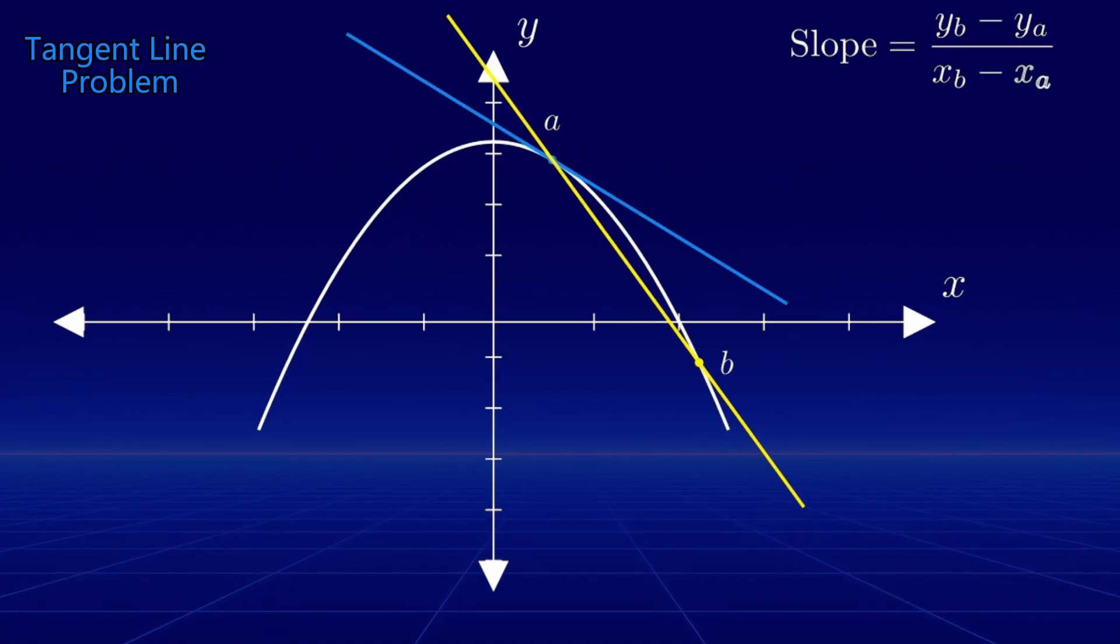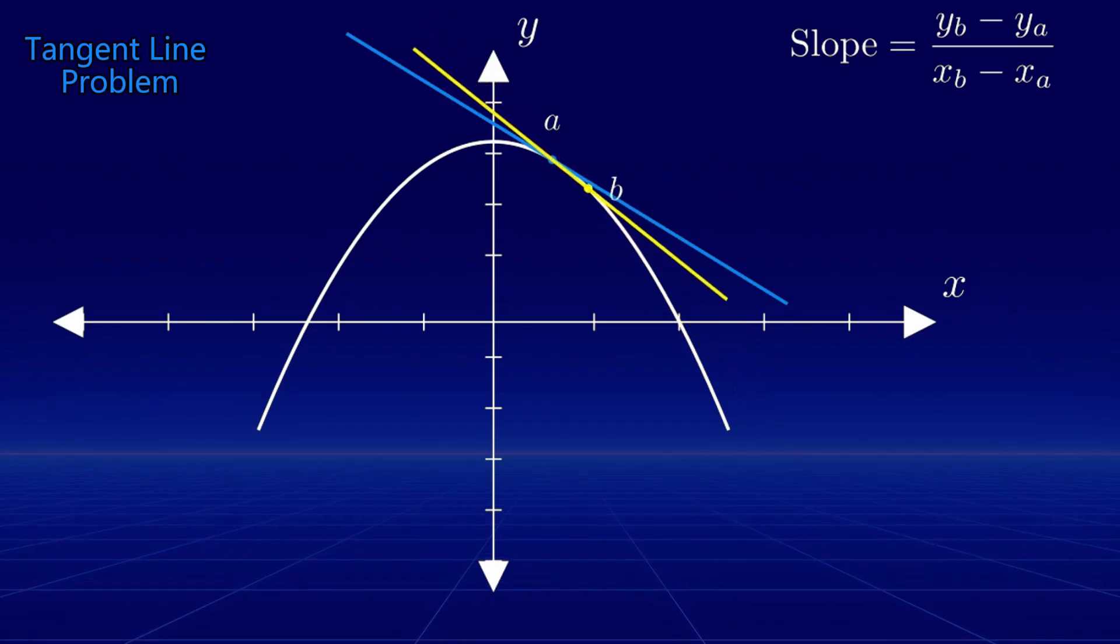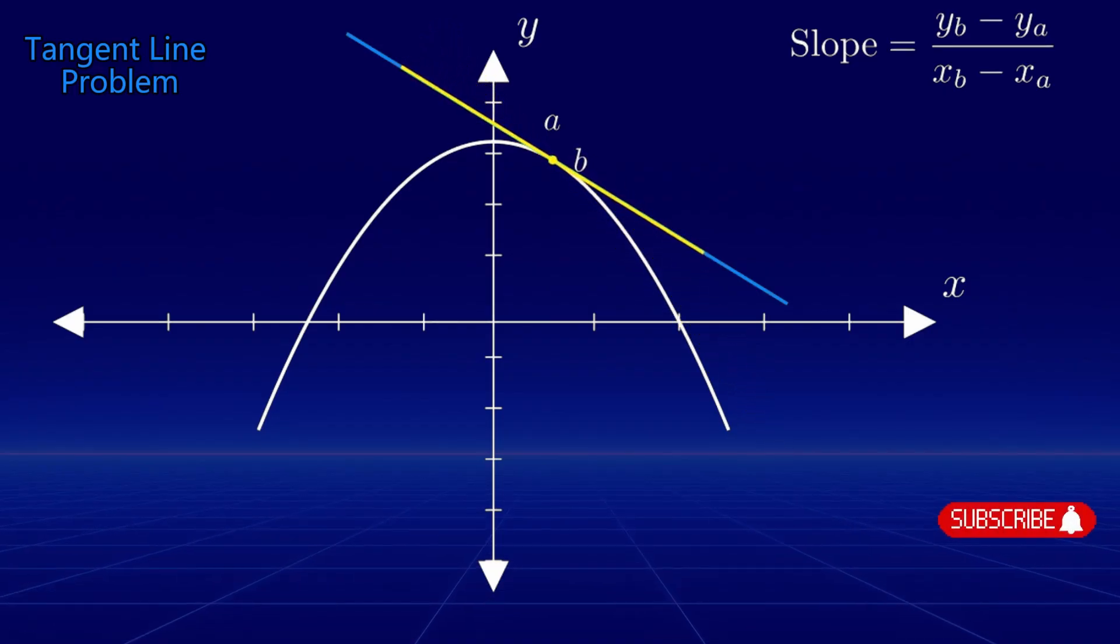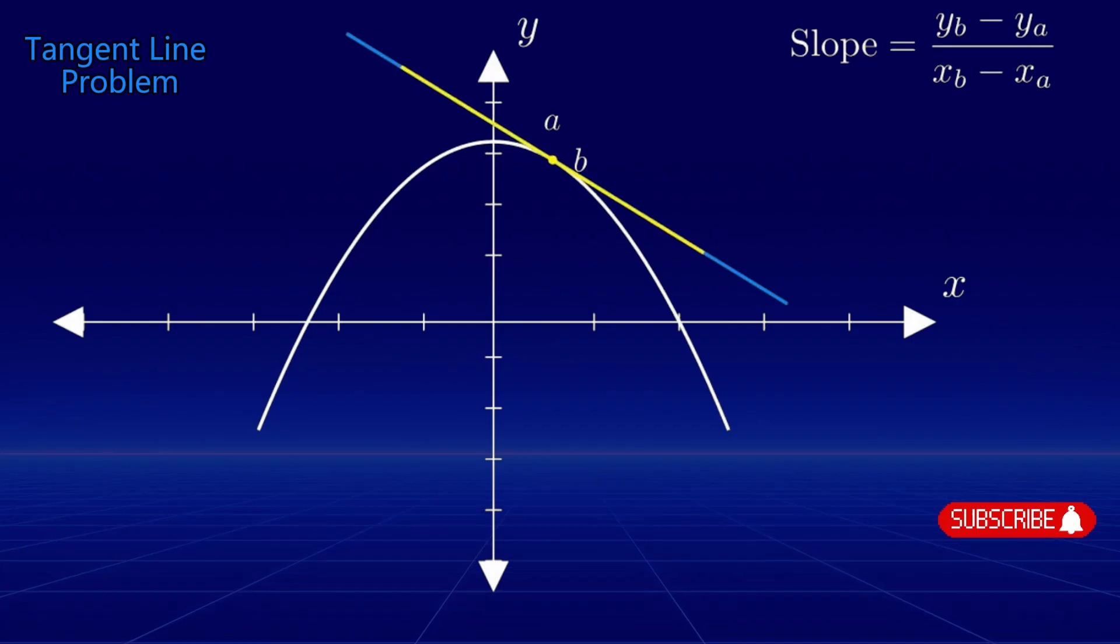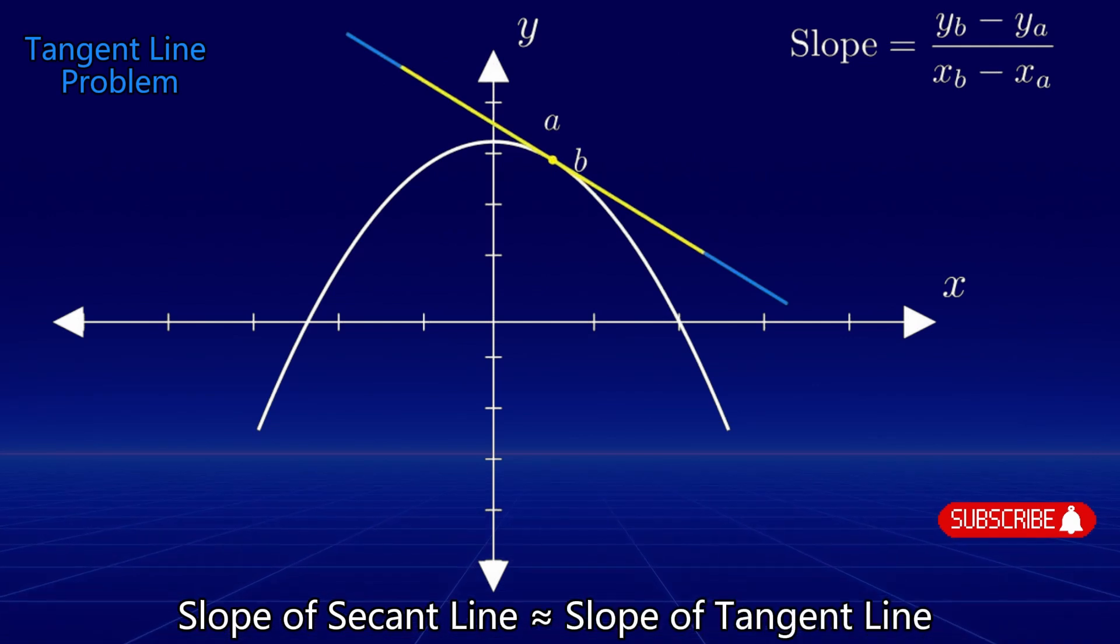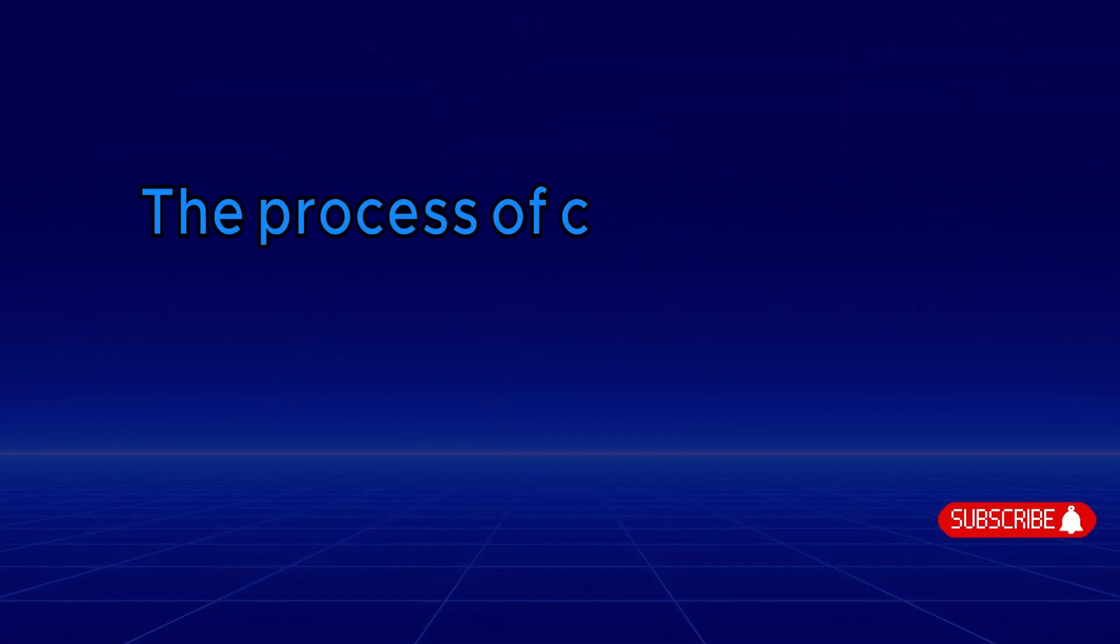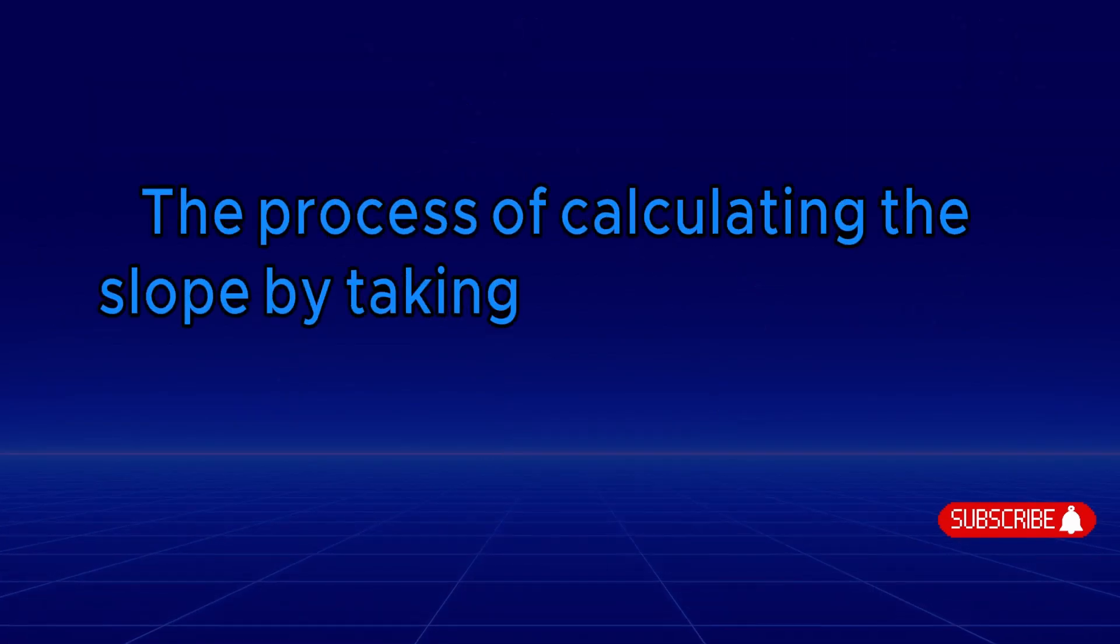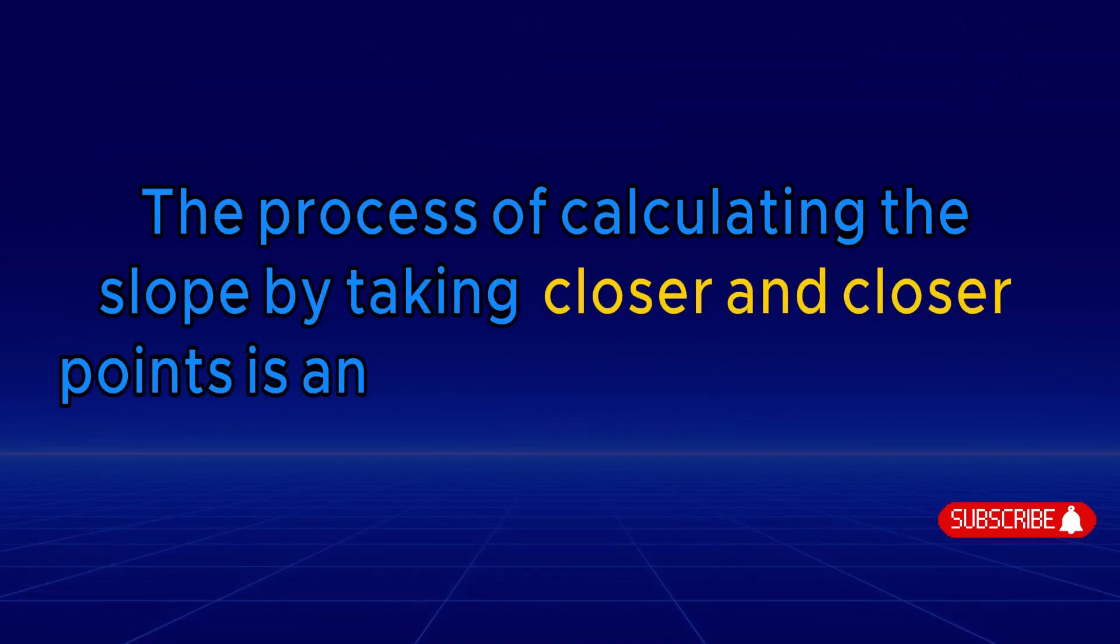Now, you can see that as we move the second point closer to a, the slope of the secant line will become a better and better estimate of the slope of the tangent line. As the distance between the two points approaches zero, the secant line converges to the tangent line. We can see as we approach a closer and closer, the slope of the secant line connecting a and b should be getting closer and closer to the slope of the tangent line. This process of calculating the slope by taking closer and closer points is an example of taking a limit.